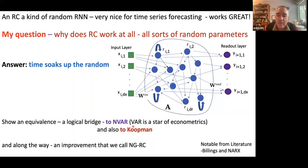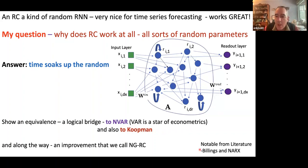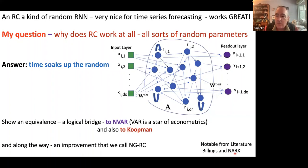Let me show the logical bridge to NVAR. NVAR is a variant of VAR — non-linear vector autoregression — a staple from econometrics dating back to the 1950s–1960s. There's also notable literature covering much the same ground in a slightly different context by an English fellow named Billings, who was calling these NARX — what I'm calling NVAR.